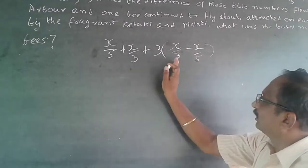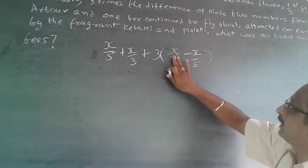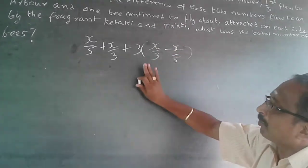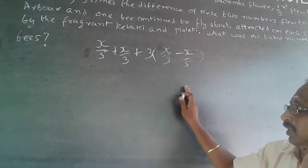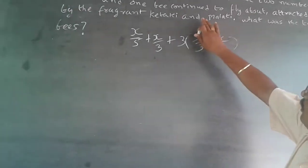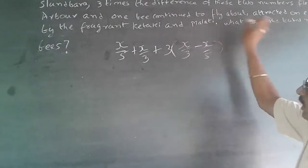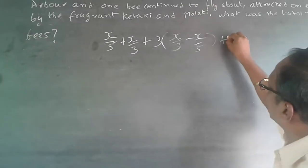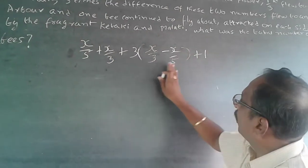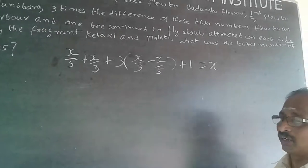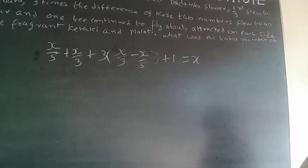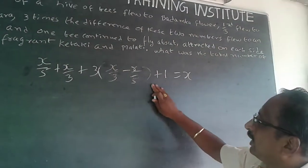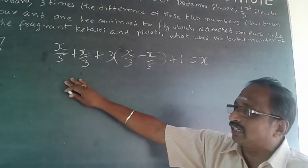When the denominator is less, the value will be more. Then one bee is going here and there, so plus 1. This equals the total number of bees, which is x. The logical part here is understanding 'three times the difference' - that's very important.